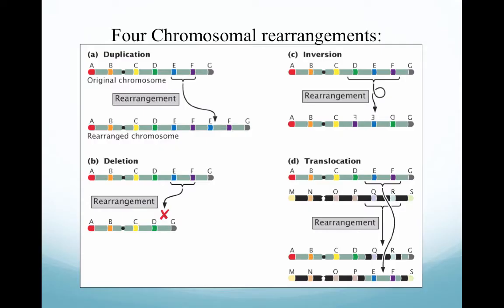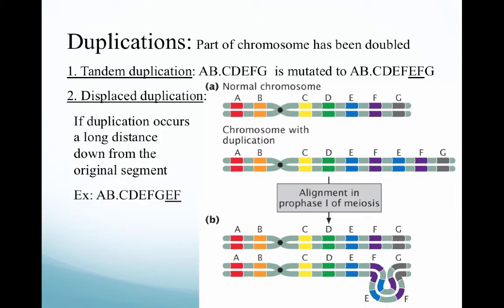There are four chromosomal rearrangements that are well documented: duplication, deletion, inversion, and translocation. In this segment, we're going to concentrate on duplications, where genetic information on the chromosome has actually been doubled.